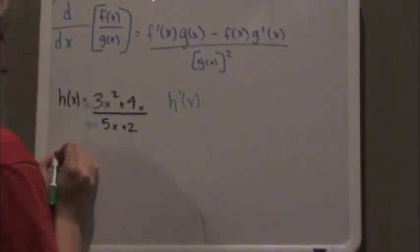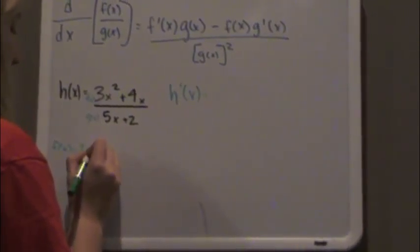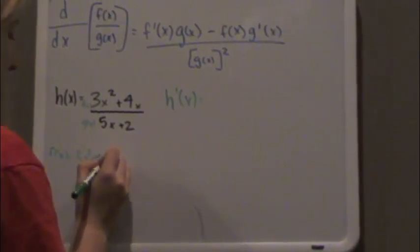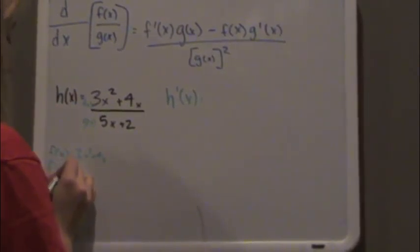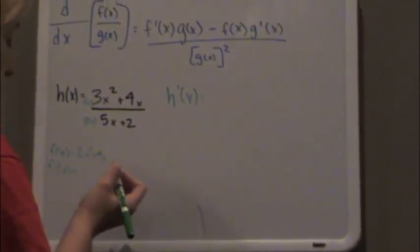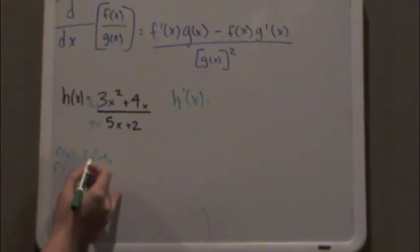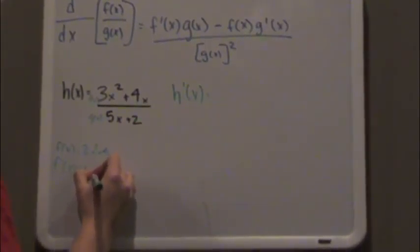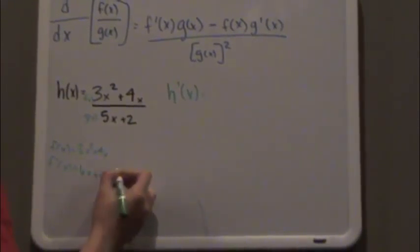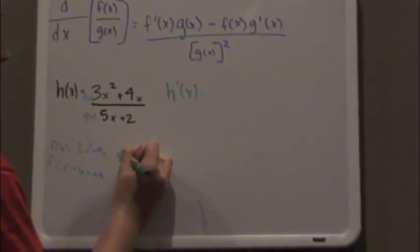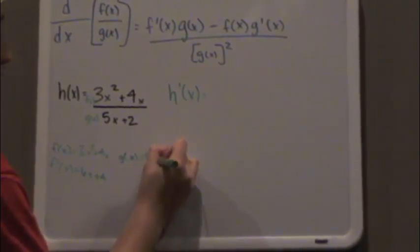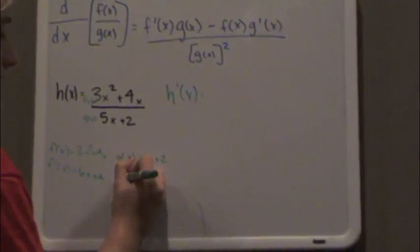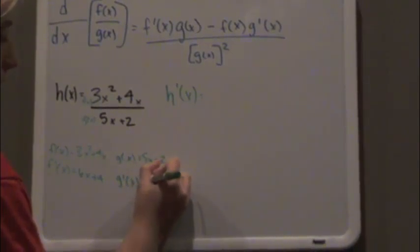So f of x equals 3x squared plus 4x and the derivative of that, the derivative of the numerator would be, using the power rule we know that it would be 6x plus 4. And g of x equals 5x plus 2. And if we derive that, we get 5.